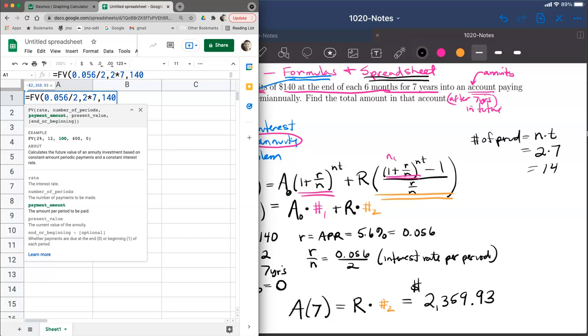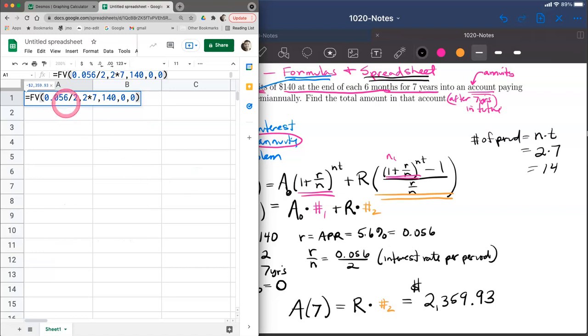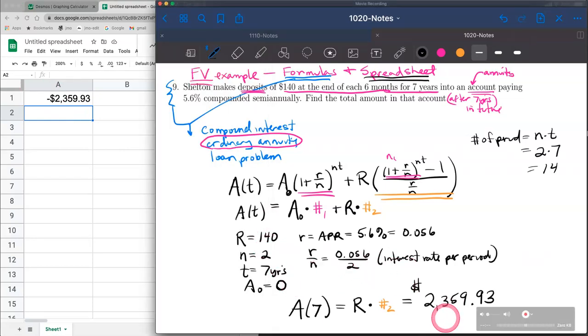Next is the present value, which is how much we started with—in this case, zero. We also specify to make payments at the end of the period. The number that appears is $2,359.93, which is the future value if you hit enter. The computer shows it as negative because the $140 came out of your pocket, but that money went into the annuity. So $2,359.93 is the amount of money in the account.